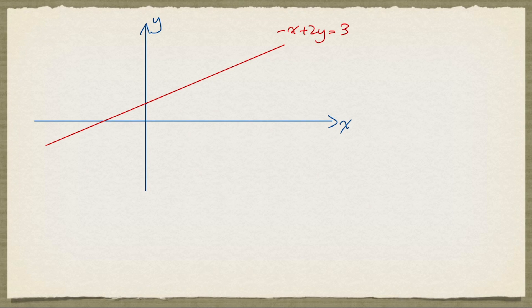We look at an example of describing all the points on a half line. Here we have a red line defined by the equation negative x plus 2y equal to 3. So the red line is simply the set of all x, y satisfying this equation.